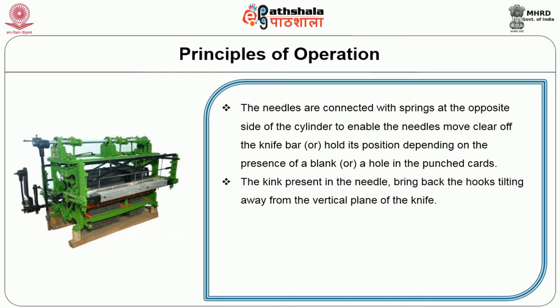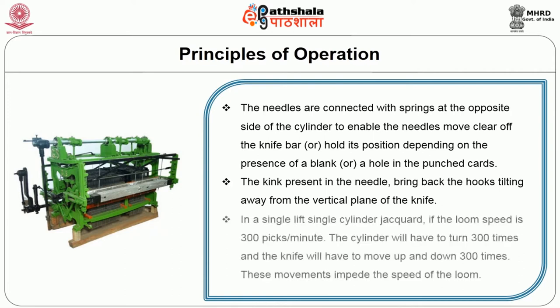The nick present in the needle — a small bent portion encircling the needle — will bring back the hook which is tilting away from the vertical plane of the knife. In a single lift, single cylinder jacquard, if the loom speed is 300 picks per minute, the cylinder will have to turn 300 times and the knife will have to move up and down 300 times. This mechanical movement actually impedes or limits the speed of the loom.